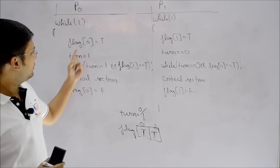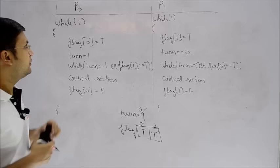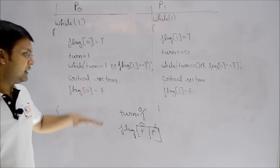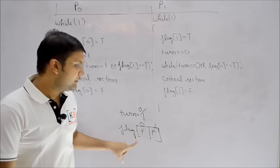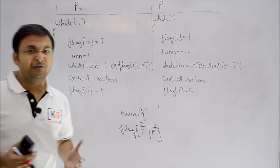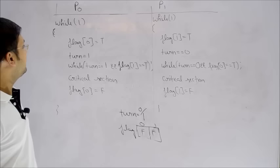This time what I'm trying to do is combine both logics together — using both the turn variable and the flag variable — to see how the algorithm behaves. The basic logic: turn is a boolean variable, either 0 or 1, and the flag array starts with both values as false. First, let's try to prove whether mutual exclusion holds, and then we'll try to prove progress for the third time.